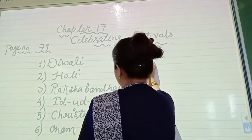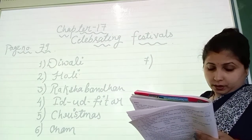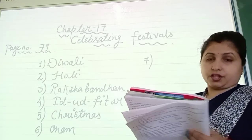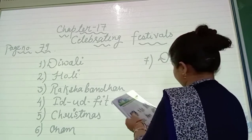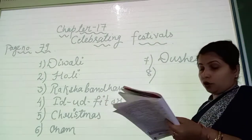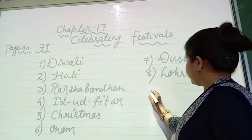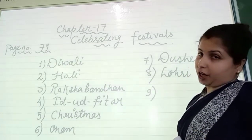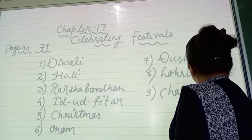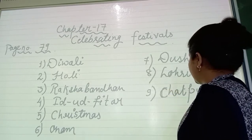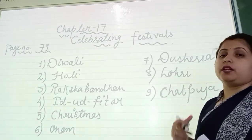Now the seventh one — Ravana's effigy is here, this is Dussehra, D-U-S-H-E-R-R-A. The eighth one is Lohri, L-O-H-R-I. And the ninth one is Chhath Puja, C-H-A-T-P-U-J-A. So here are nine festivals which were given in your book as the internal portion for page number 79.